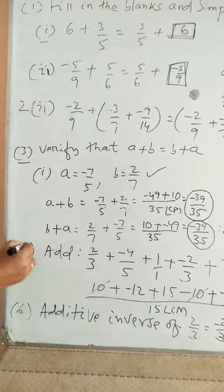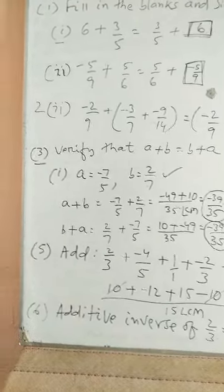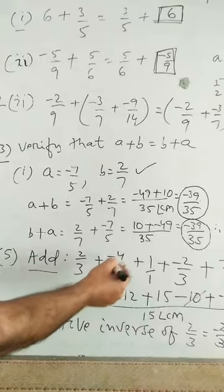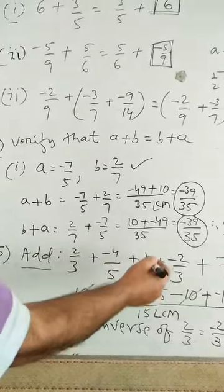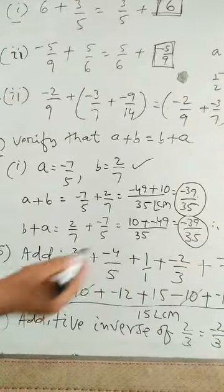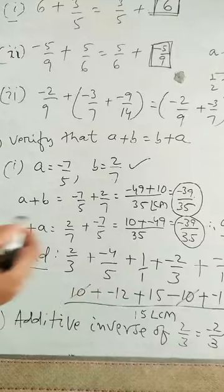Now, let us take question number 5, let us solve question number 5, add 2 by 3 plus minus 4 by 5 plus 1 plus minus 2 by 3 plus minus 11 by 15. So, 1 can be written as 1 by 1.